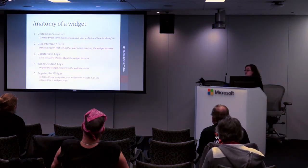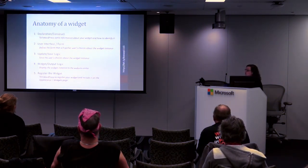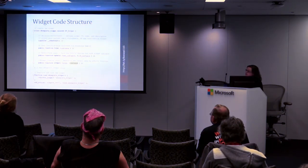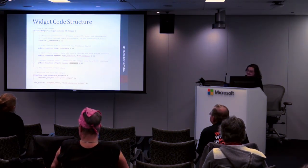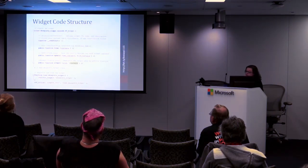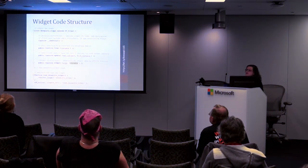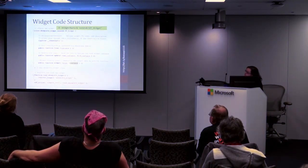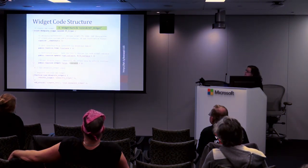We're not doing this all from scratch — we get to reuse bits of WordPress core code. This is a very simplified and completely empty widget code structure. At the very top it says "class showposts_widget extends wp_widget" — that's the part where we get to sit on top of the WordPress code and have access to all the things it already does.